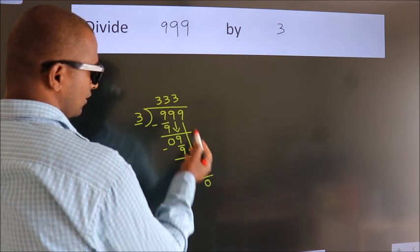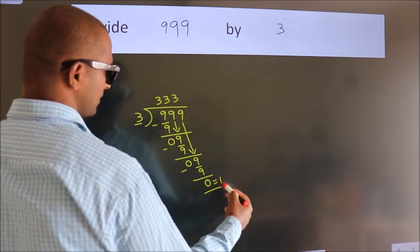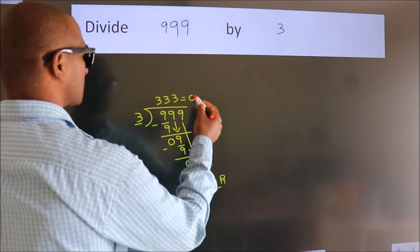After this, no more numbers to bring down. So we stop here. This is our remainder. This is our quotient.